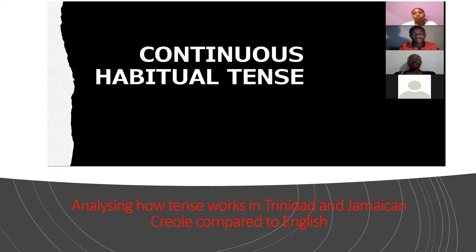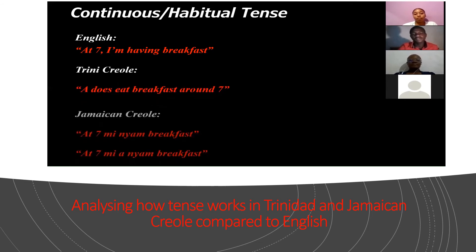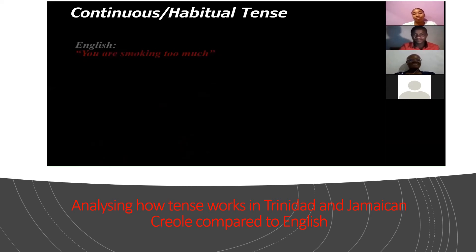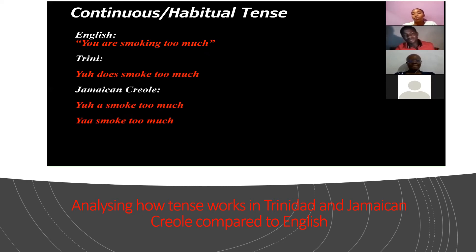Now we will look at continuous habitual tense. The first sentence is: 'At seven I'm having breakfast.' In Trinidad: 'I just eat breakfast around seven.' In Jamaican Creole: 'At seven me ah eat breakfast' — you can use 'ah' depending on where you are from. I noticed 'ah' comes in a lot with the Jamaican Creole. Moving on: 'You are smoking too much.' In Trinidadian: 'You does smoke too much.' In Jamaican you can say 'you are smoked too much' or 'yeah smoke too much' — 'yeah' being a blend of 'you' and 'ah,' meaning 'you are.'